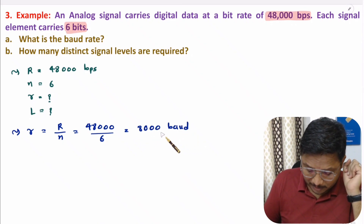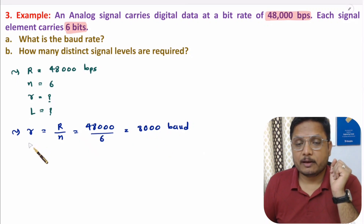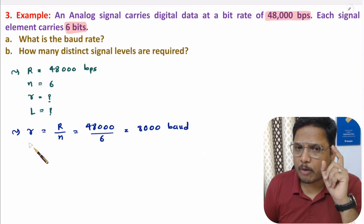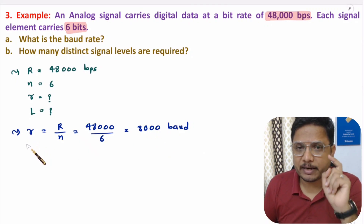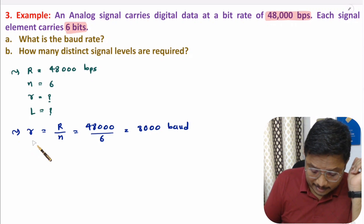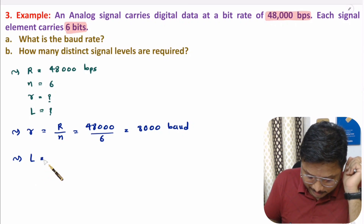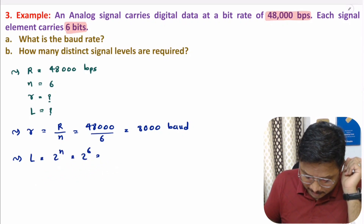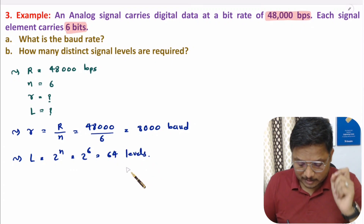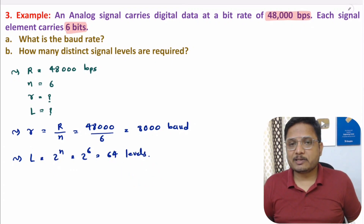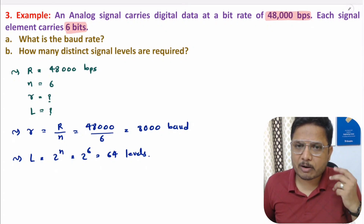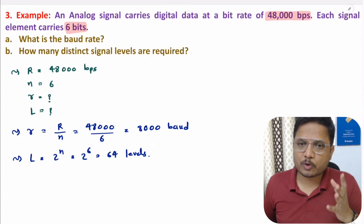The baud rate is 8,000 baud. Always remember that baud rate will be lower than bit rate. The second question is to identify the number of distinct signal levels: L = 2 to the power n = 2 to the power 6 = 64 levels. That is how one can solve questions based on bit rate, baud rate, number of bits per symbol, and total number of symbols.